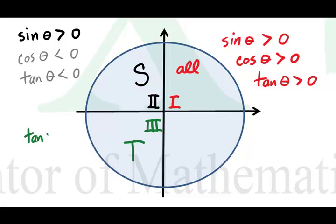Third quadrant, the tangent of theta will be positive, but sine theta will be negative and cosine theta will be negative.